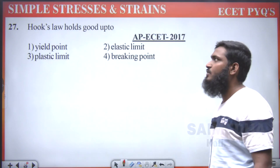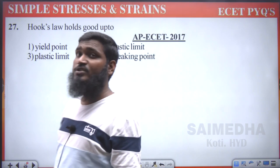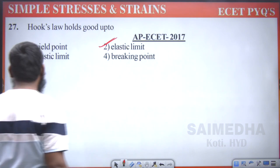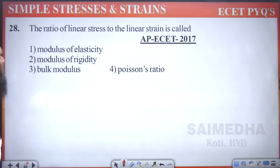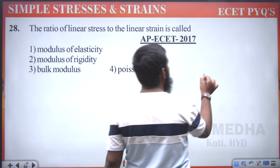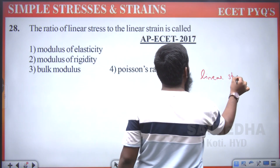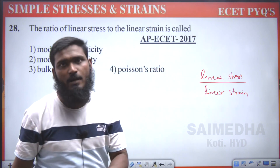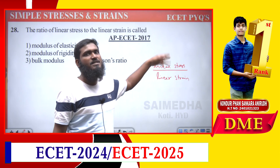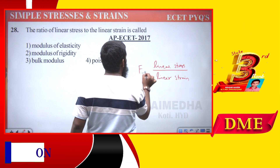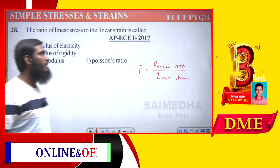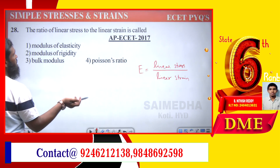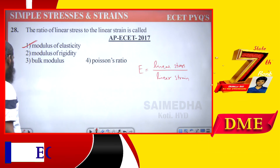Hooke's law holds good up to — repeated question. If proportional limit is given, go with that; if not, go with elastic limit. So option 2, elastic limit, is correct. The ratio of linear stress to linear strain — linear stress divided by linear strain means tensile or compressive: tensile stress by tensile strain or compressive stress by compressive strain — we call that modulus of elasticity. Option 1 is correct.